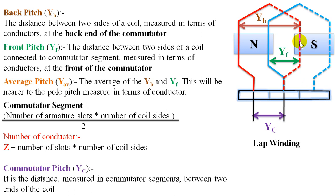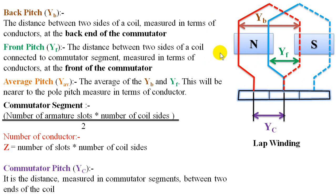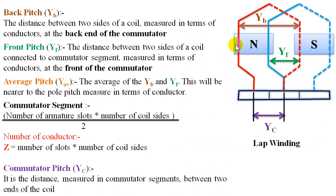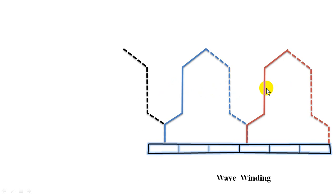YB is the distance between the start and end of the same coil with respect to slots or conductors — called back pitch. YF is the distance from the end of one coil to the start of the successive coil under the same commutator segment — called front pitch. YC is the distance measured in commutator segments between the start and end of a coil. Let us now see the same terminology with respect to wave winding. YB is the distance between two sides of a coil measured in terms of conductors at the back end of the commutator.